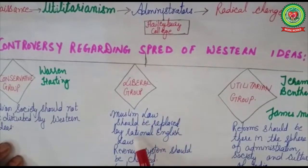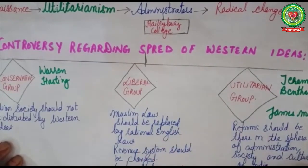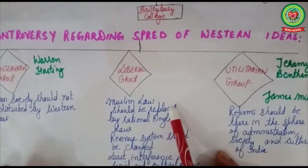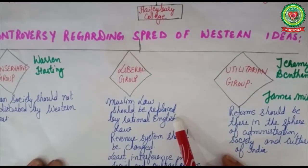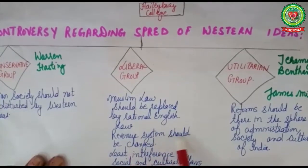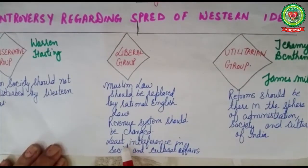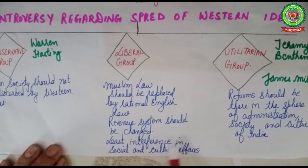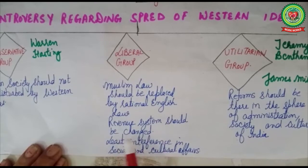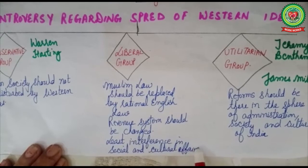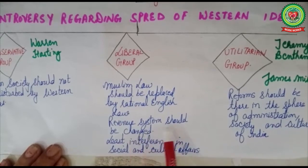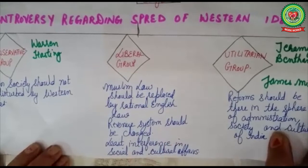The liberal group believed that Muslim law should be replaced by rational English law, and that the revenue system of India should undergo changes. However, it believed that least interference should be made in the social and cultural affairs of India, wanting minimal changes there because it could provoke Indians against the British.